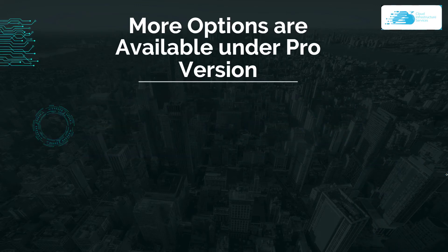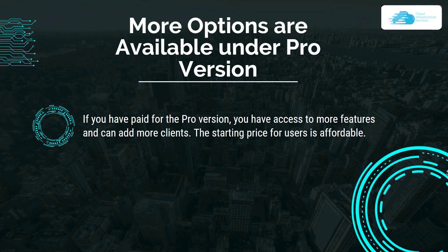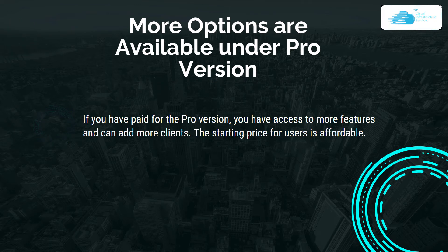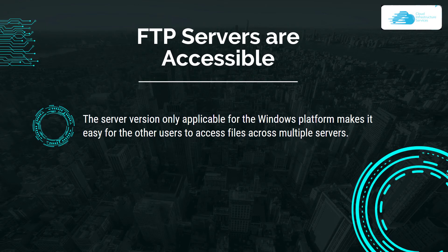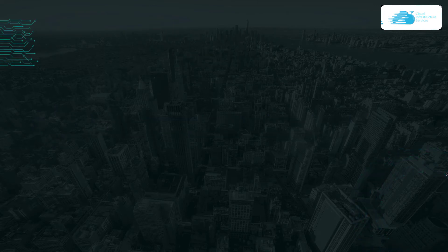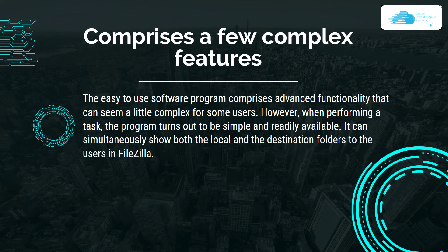Number two: more options are available under the pro version. If you have paid for the pro version, you have access to more features and can add more clients, with an affordable starting price. Number three: FTP servers are easily accessible — the server version, applicable only for the Windows platform, makes it easy for users to access files across multiple servers. Number four: it also comprises advanced functionality that can seem complex for some users, but when programming a task the program turns out to be simple and readily available.